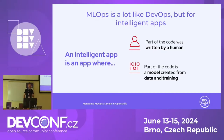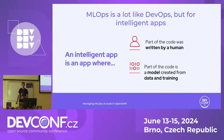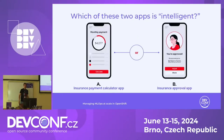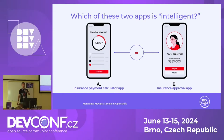An intelligent app is an application where we have two different parts: part of the code was written by a human, and part of the code is a model that was created from data and training. I have a question: which of these two apps is intelligent? We have App A, an insurance payment calculator app, and App B, an insurance approval app.